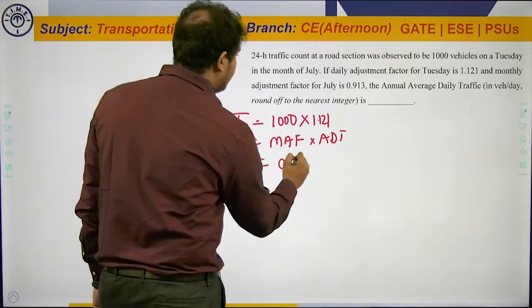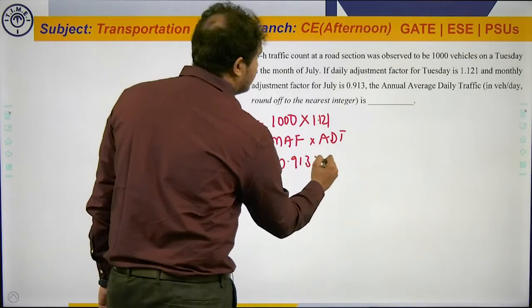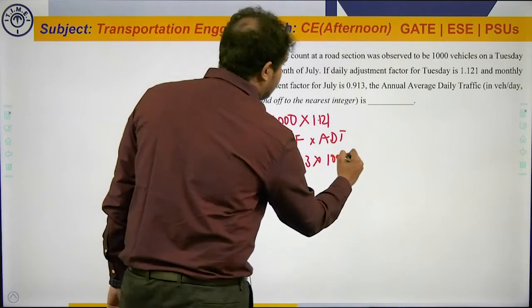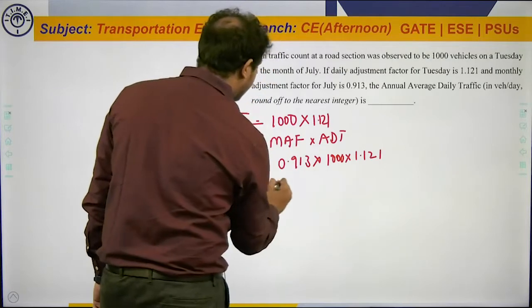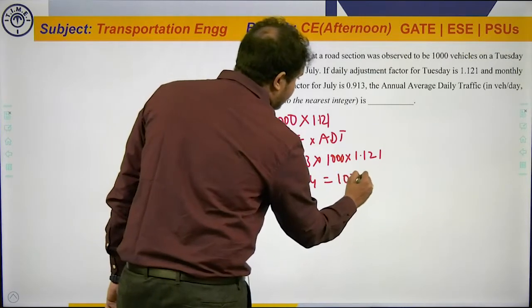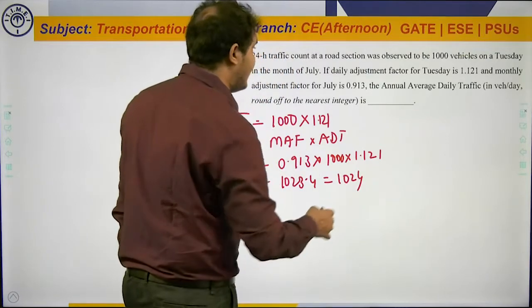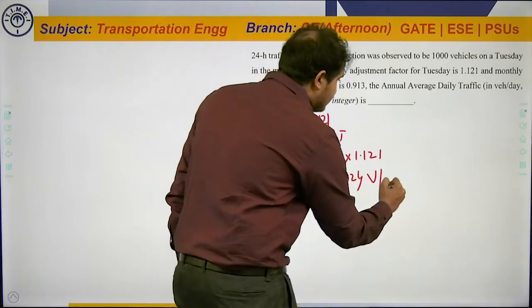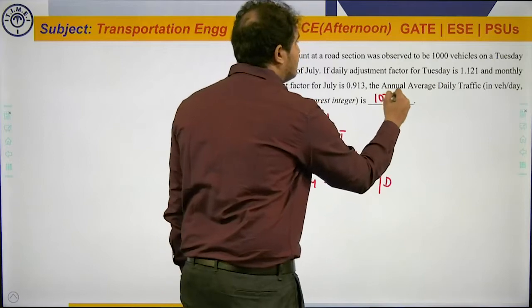0.913 times 1000 times 1.121. That gives you 1023.4, which is approximately equal to 1024 vehicles per day. The answer is 1024.